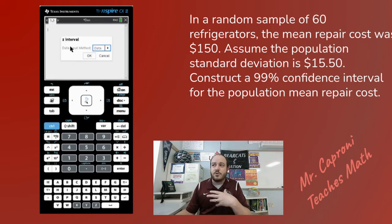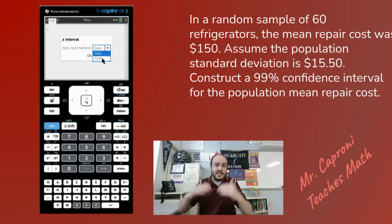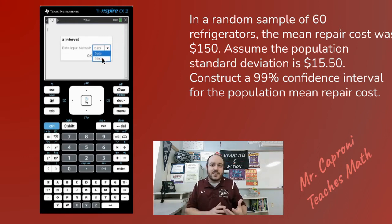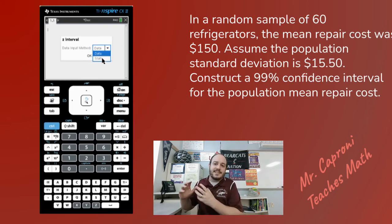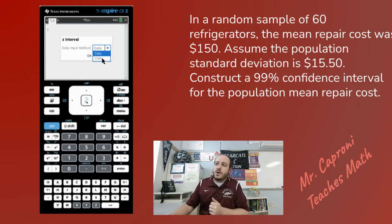Once you click on that, a pop-up window comes up and it says Data — but we actually want Stats for this. Here's the difference: if you didn't have the summary statistics and instead had the raw data — like a list of all the original numbers — you could put those numbers into the spreadsheet function on this calculator and import that data directly. But usually when we're dealing with this, we have summary statistics for the sample we're looking at.